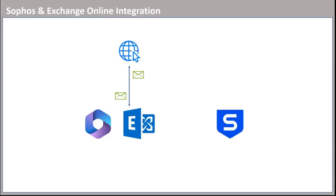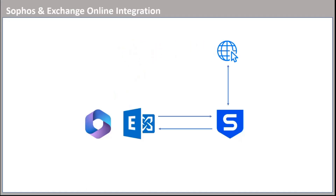Sophos email security is a cybersecurity solution designed to protect organizations from multiple types of email-based threats. When we integrate Sophos with Exchange Online and send an email from a Microsoft 365 tenant to the internet, that email is first scanned by Exchange Online Protection, then routed to Sophos via the outbound connector. Sophos then scans the email and routes it to the internet.